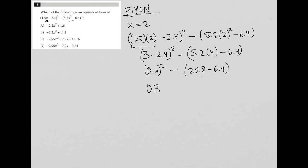Yeah, so this is 0.36 minus. And then 20.8 minus 6.4 is equal to 14.4. So this becomes minus 14.4.